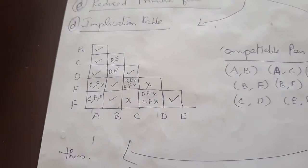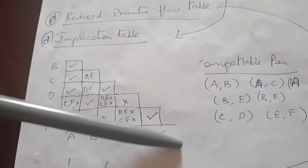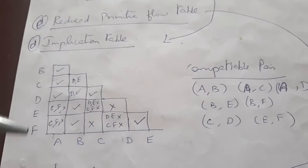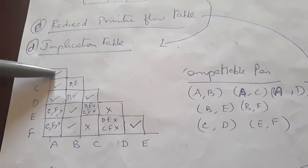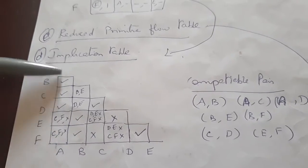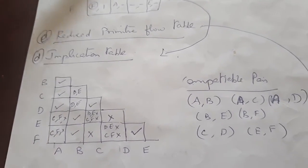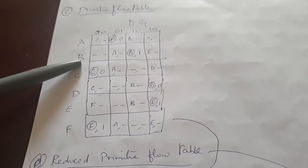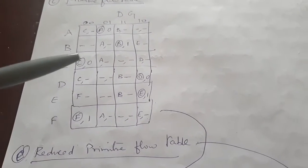The x-axis of the implication table will be A, B, C, D, E. Compare A,B with the primitive flow table; compare A,C; compare A,D. All three are compatible. When all states match, put a tick mark in the implication table.